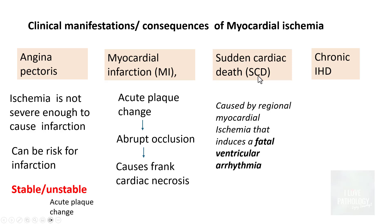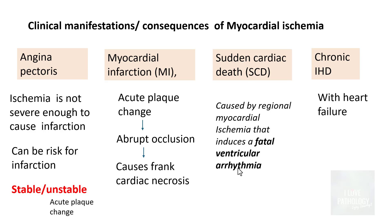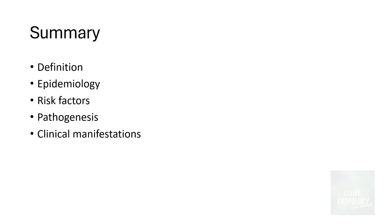Myocardial infarction is also due to acute plaque change where there is abrupt occlusion of coronary blood vessels causing frank cardiac necrosis. Sudden cardiac death is a catastrophic manifestation usually caused by myocardial ischemia that induces a fatal ventricular arrhythmia. Chronic ischemic heart disease occurs when none of the acute events take place and is usually accompanied by heart failure.